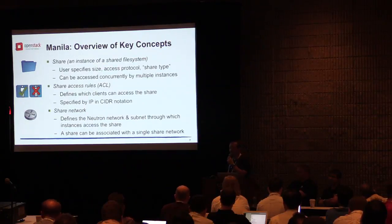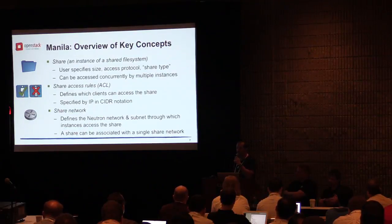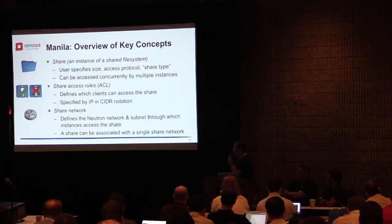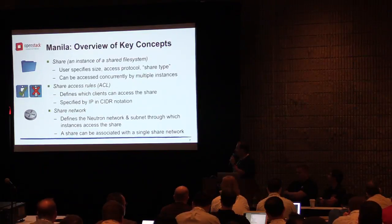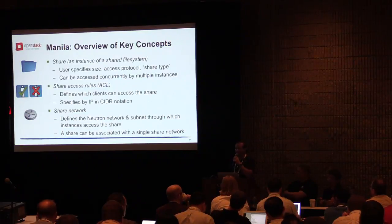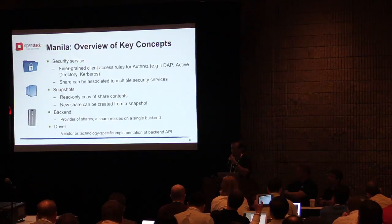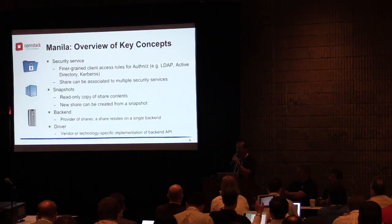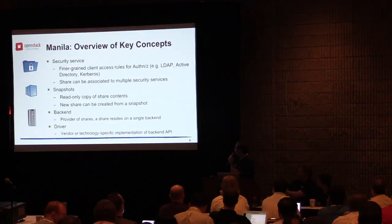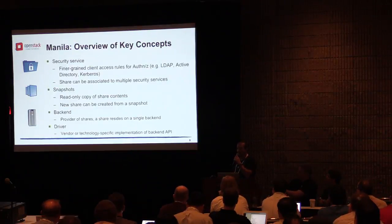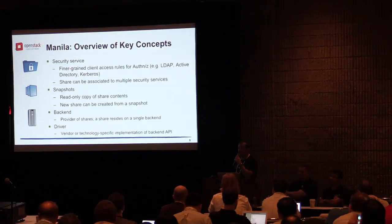Right now, the rules are based on IP information. However, work is in progress on making the share accessible by LDAP users and groups. The share can have a presence on a specific network because the shares are expressed in the tenant space. So it defines a specific L2 and L3 segment — a Neutron network and the subnet. Right now, the share can only be associated with a single network. One important thing is the security service, which is a tenant's own security service that allows the tenant to create a mapping for users in that share. You can use LDAP Active Directory, and the API allows you to associate a share with multiple security services at once if your back-end supports it.